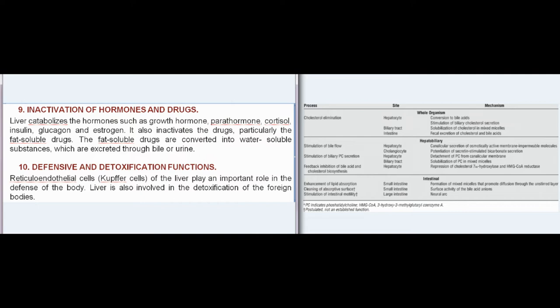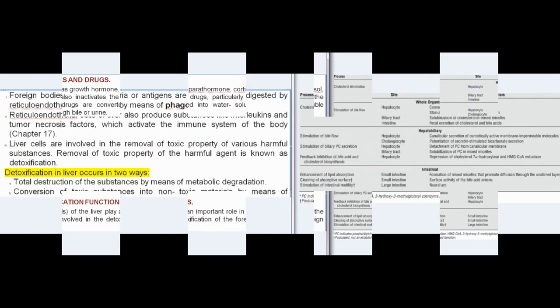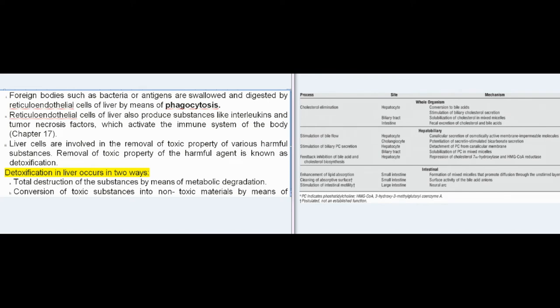Defensive and detoxification functions: reticuloendothelial cells (Kupffer cells) play an important role in the defense of the body. Foreign bodies such as bacteria or antigens are swallowed and digested by reticuloendothelial cells by means of phagocytosis. These cells also produce interleukins and tumor necrosis factors, which activate the immune system. Detoxification occurs by total destruction through metabolic degradation or by conversion of toxic substances into non-toxic materials by conjugation with glucuronic acid or sulfates.